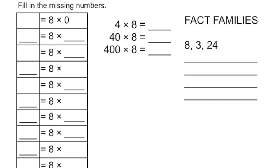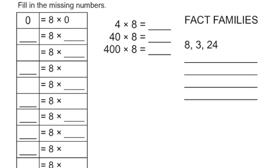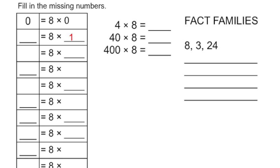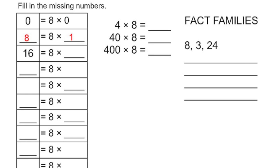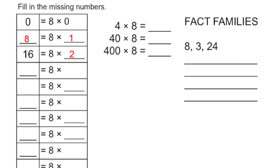Let's move down to fill in the missing numbers. We have 8 times 0 equals 0. As you know by now, anything multiplied by 0 is equal to 0. 8 times 1 is just going to be 8. I see 16 there, so 8 times something equals 16. How many times does 8 go into 16? Twice. So 8 times 2 equals 16.